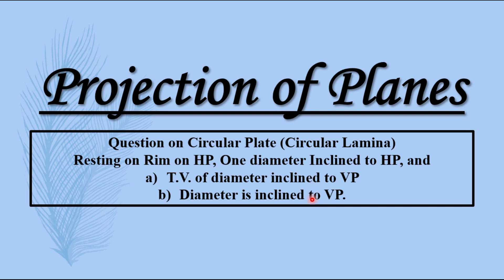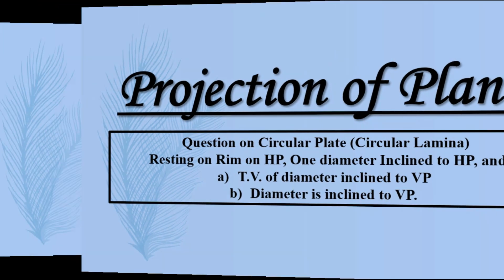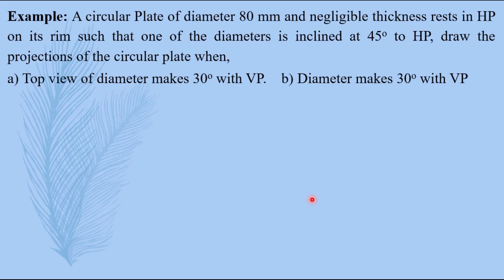Now these two are different conditions. In order to understand, we have to discuss both cases side by side. A circular plate of 80 mm diameter and negligible thickness rests in HP on its rim such that one of its diameters is inclined at 45 degrees to HP. Draw the projections when first condition: top view of diameter makes 30 degrees with VP, and second condition: diameter makes 30 degrees with VP.